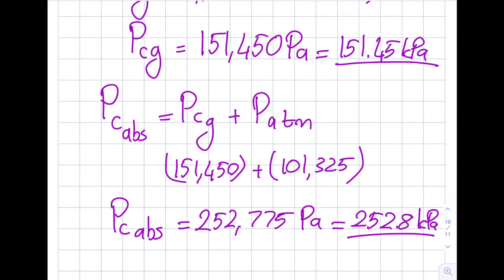Converting to absolute: pC_abs = pCg + p_atm = 151,450 + 101,325 = 252,775 Pa ≈ 252.8 kPa absolute. Now I can celebrate — that's the final answer. These two representations are the same point, just expressed differently. In typical problems you're more interested in gauge pressure, but here absolute was specifically requested.